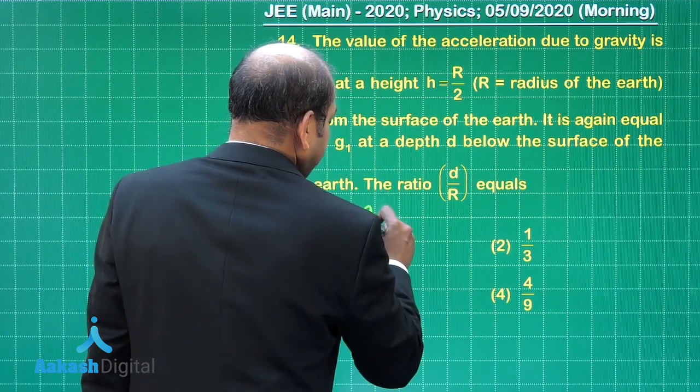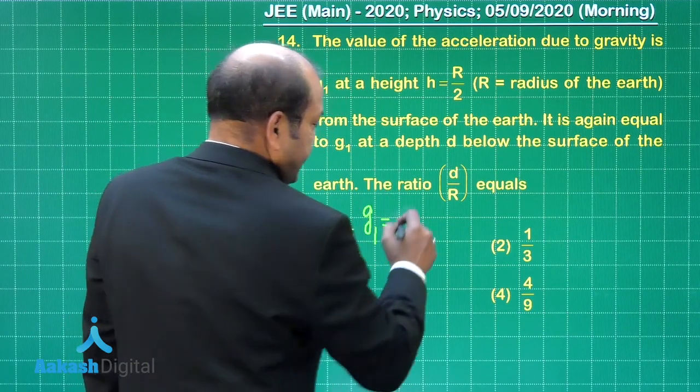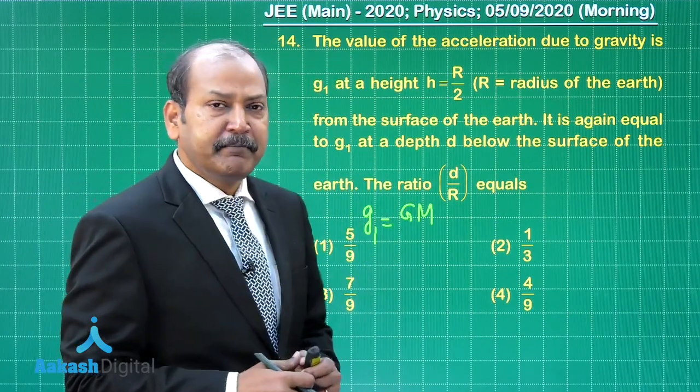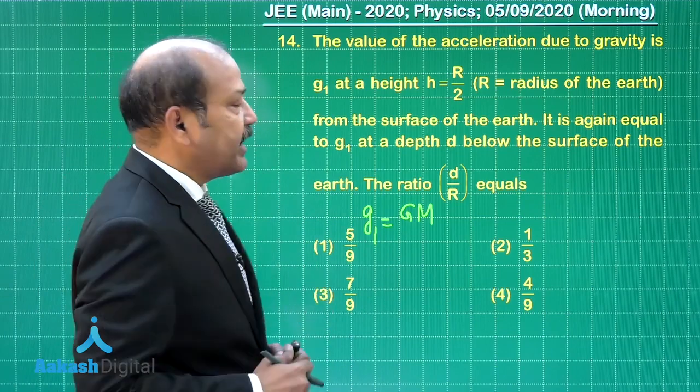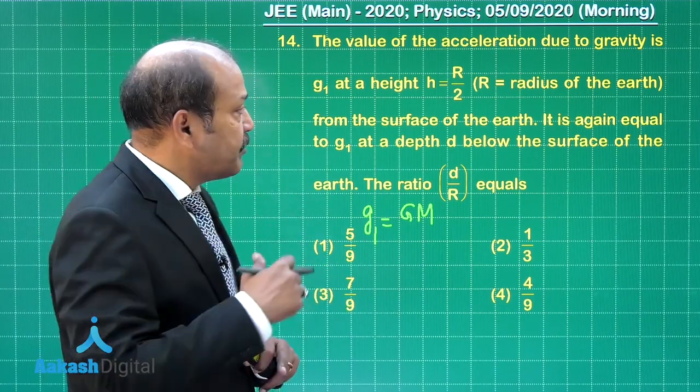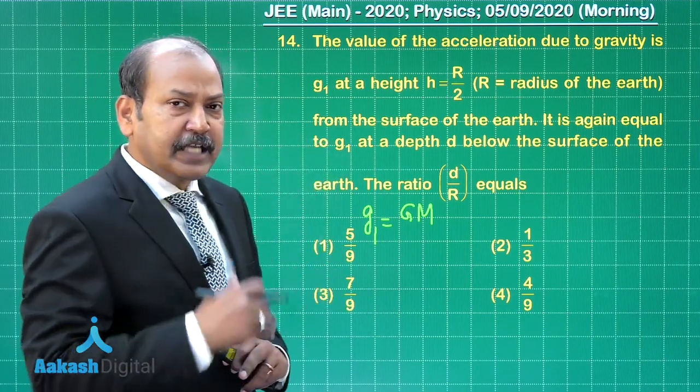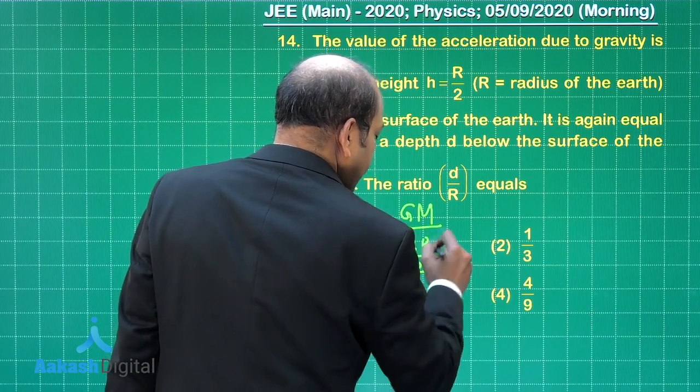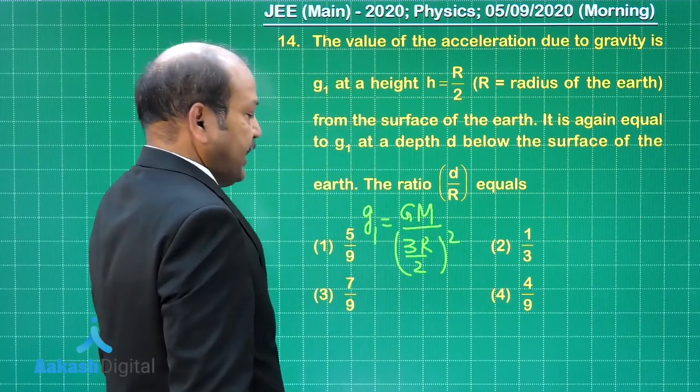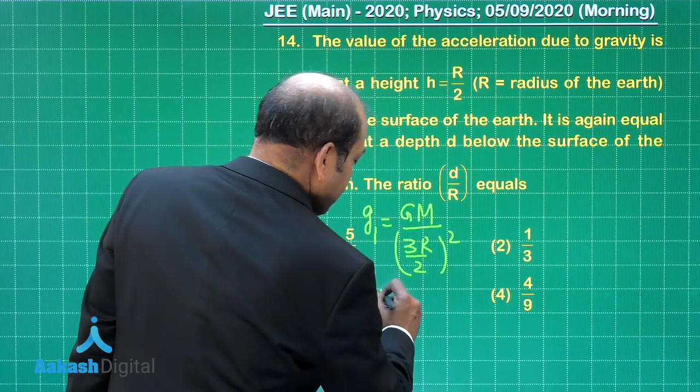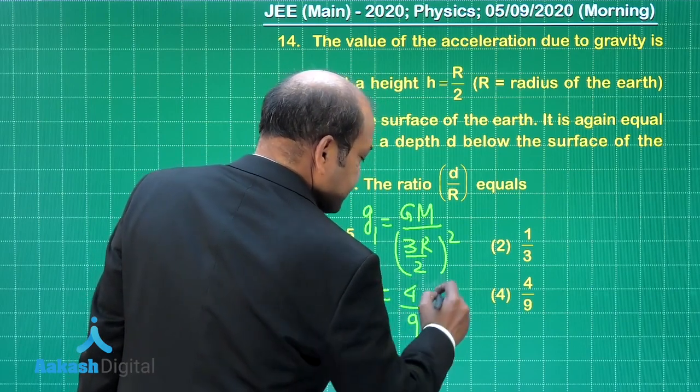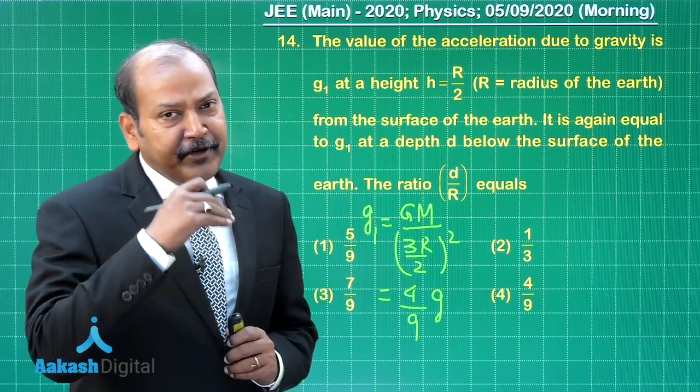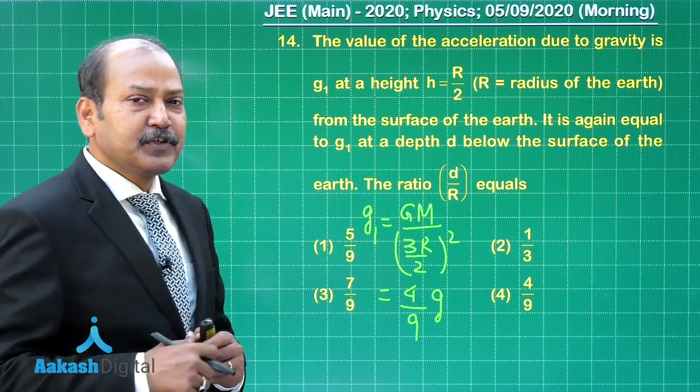The expression for g1 in fact is equal to GM, capital G being the gravitational constant, M being the mass of earth, divided by the distance from the center of earth, which now becomes r plus r by 2, that means 3r by 2. So in the denominator we have 3r by 2 the whole square, and this is then coming out as equal to 4 by 9 times g. So g1 is 4 by 9 times of g, where g is the acceleration due to gravity on the surface of earth.